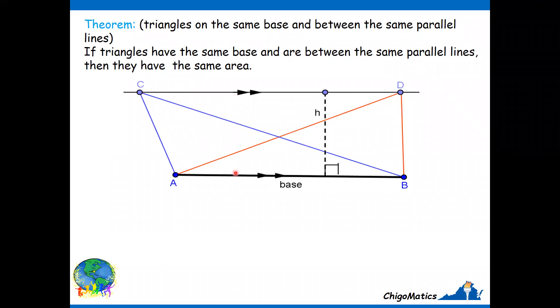This is the model of that theorem. You can see that the base is AB, and the height is H. So triangle ABD, the one in red, and triangle ABC, they have the same area.